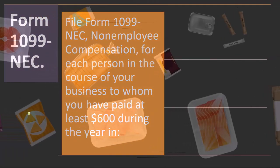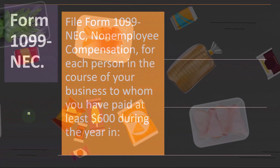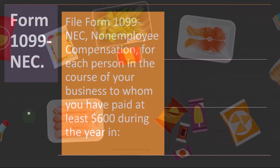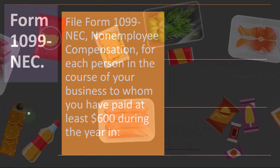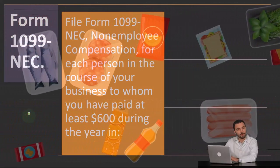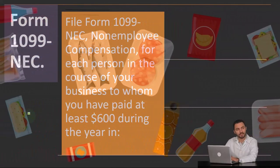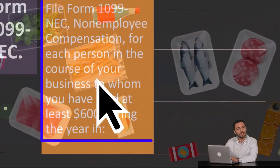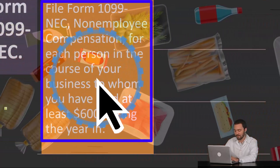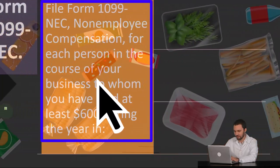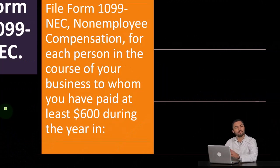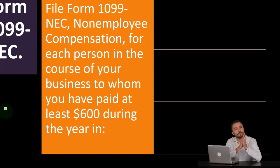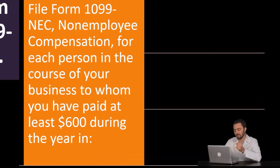Then we have the form 1099-NEC. This is probably the most common 1099 that most small businesses may be required to file as information returns. Keep in mind, we're not only talking about receiving the 1099 — you might receive these 1099s as well, meaning that someone else is reporting payments to you.